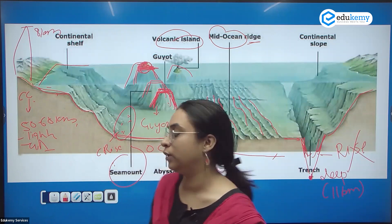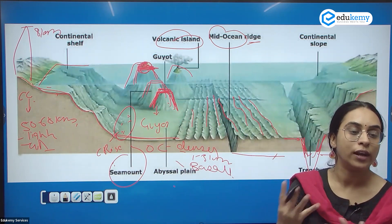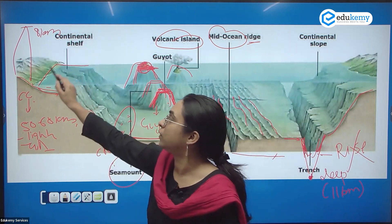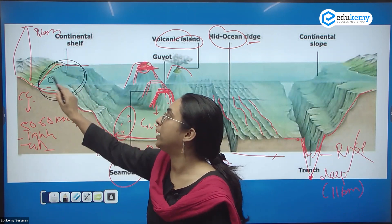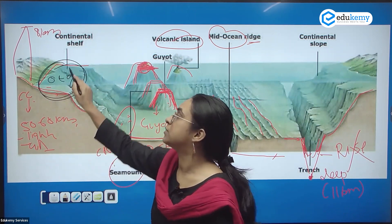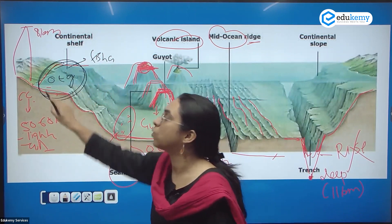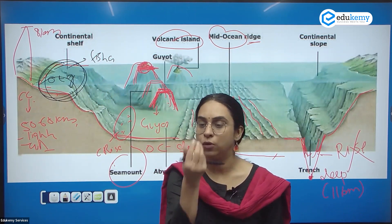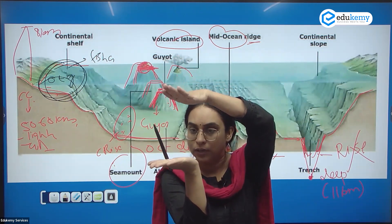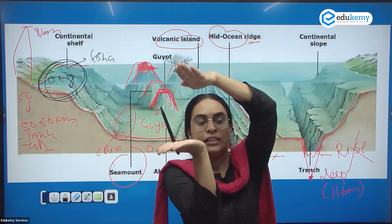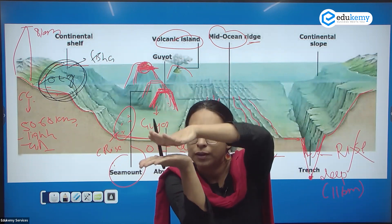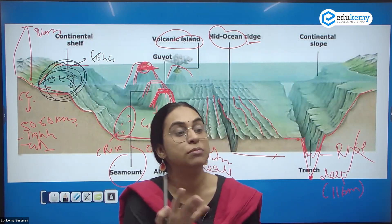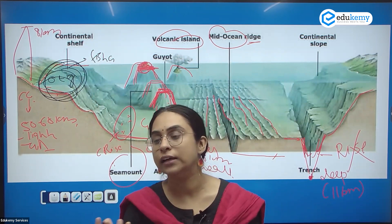In ocean bottom relief, the major zone where oil, gas, and fish are found is the continental shelf. This is the major oil and gas region as well as the major fishery region. Small marine organisms accumulate over time, get compressed, and form oil and gas — so oil and gas are resources derived from marine organisms.